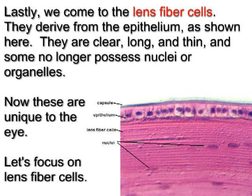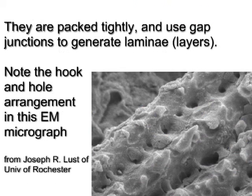Lastly, we come to the lens fiber cells. They derive from the epithelium. They are clear, long, and thin, and some no longer possess nuclei or organelles — and these are unique to the eye. They are packed tightly and use gap junctions to generate laminae, or layers. Note the hook and hole arrangement in this EM micrograph.